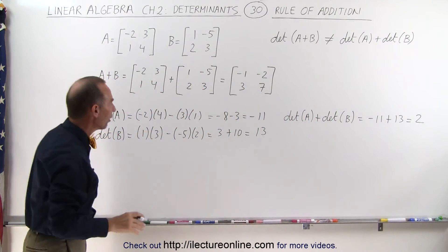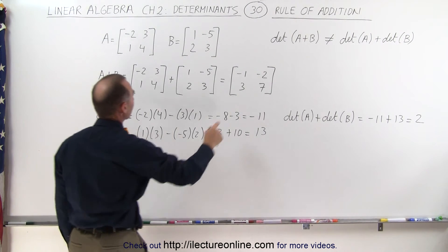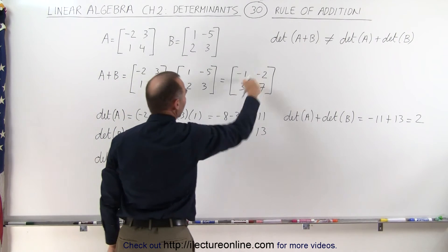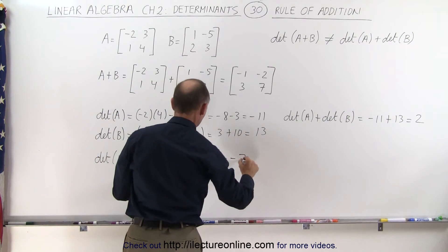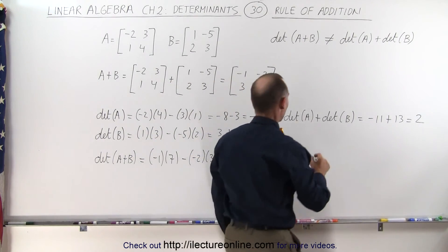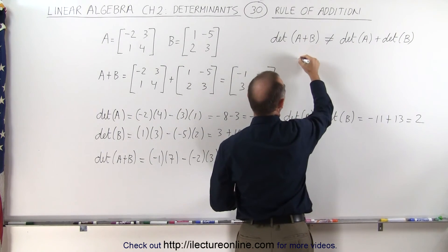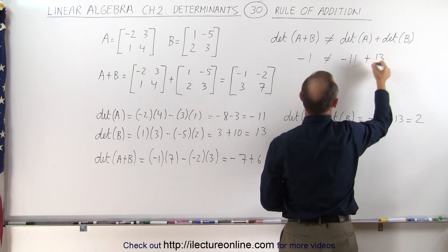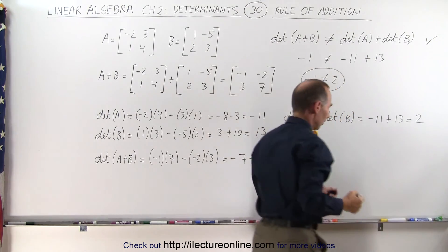Now let's take the determinant of A plus B. The determinant of A plus B equals — here's the sum right here — the product of those two: minus 1 times 7, minus the product of those two: minus 2 times 3. This equals minus 7 minus negative 6, which is plus 6, giving minus 1. Notice that the determinant of A plus B is negative 1, which is not equal to positive 2 (which was det(A) plus det(B), or minus 11 plus 13).